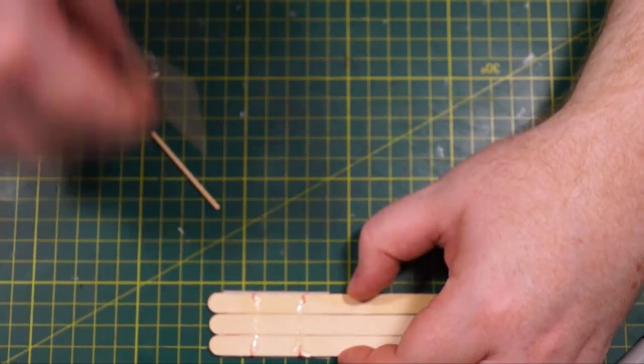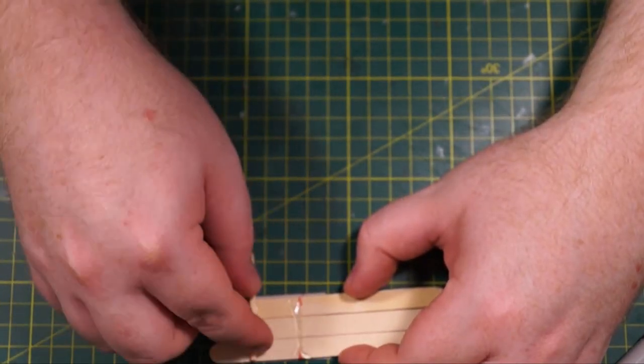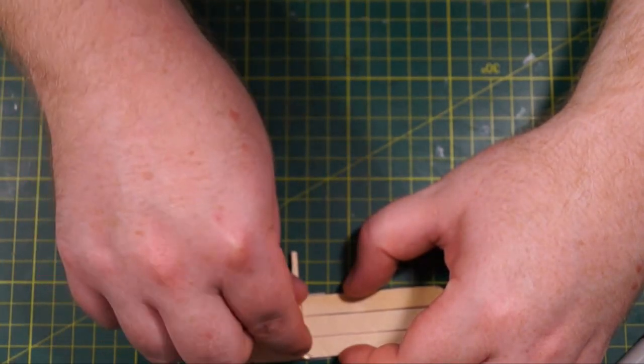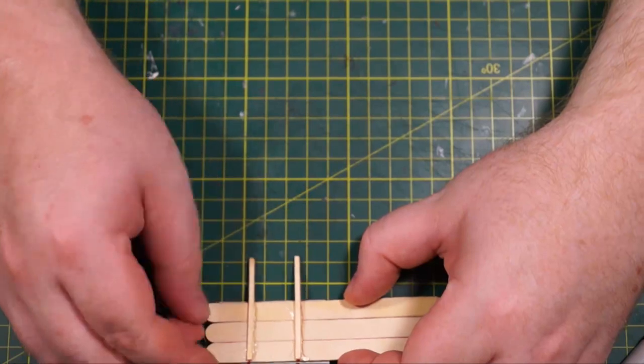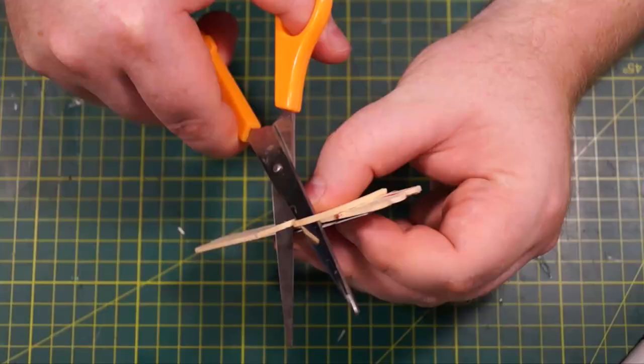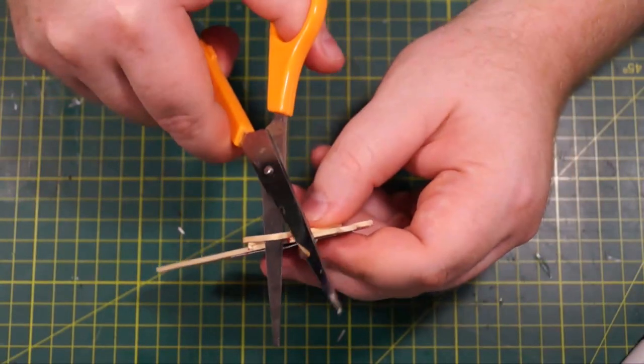So we're just going to put some hot glue down and drop on the matchsticks. So these are matchsticks without heads, also available at craft stores. You can use matches but obviously you want to cut the heads off. So there we go, weird rectangle shape with two prongy things sticking out.